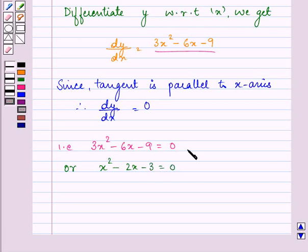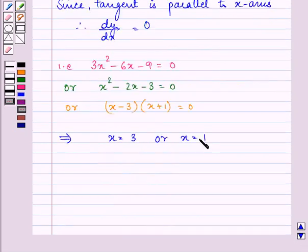Or we have x squared minus 2x minus 3 equal to 0. We have divided the equation by 3, or on splitting the middle term we have the factors as x minus 3 into x plus 1 is equal to 0. So this implies that the value of x is either 3 or it is minus 1.